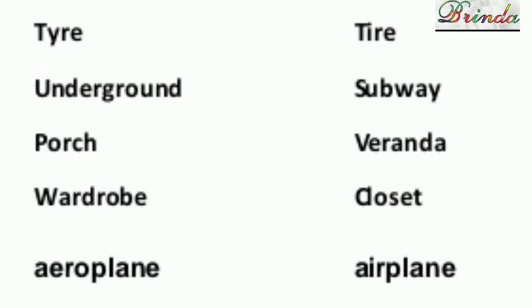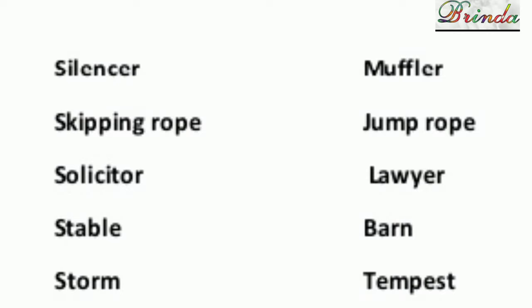Porch versus veranda. Wardrobe is British English; closet or dresser is American English. Aeroplane is British English; airplane is American English. Silencer is British English; muffler is American English. Skipping rope is British English; jump rope is American English.